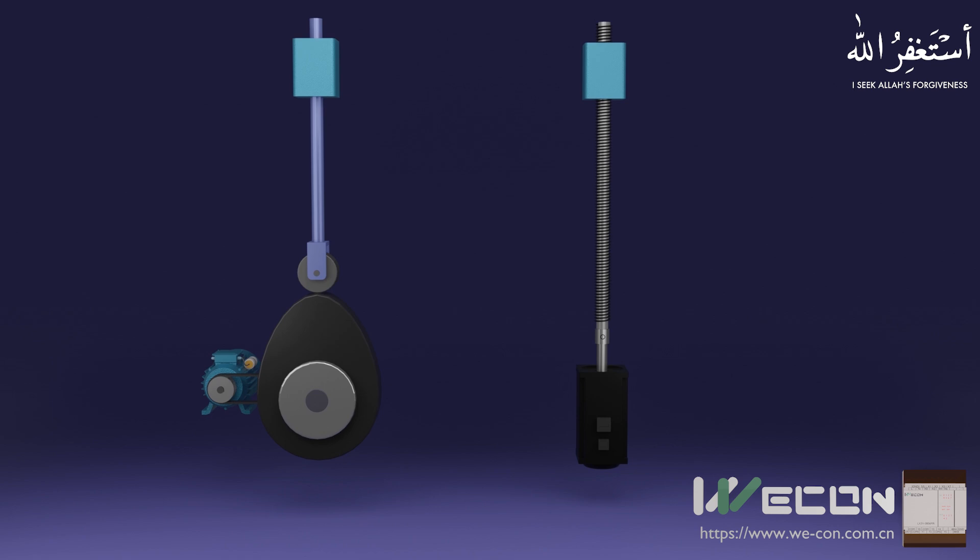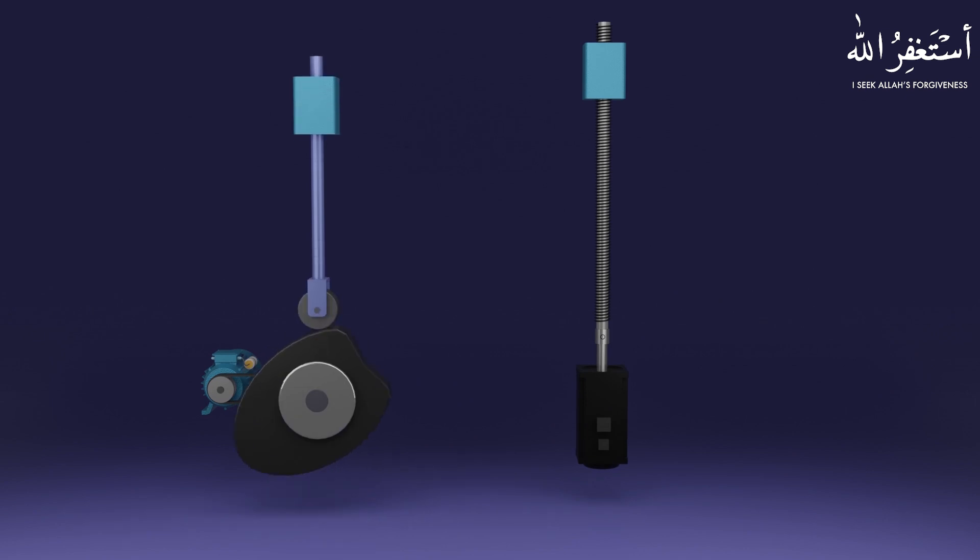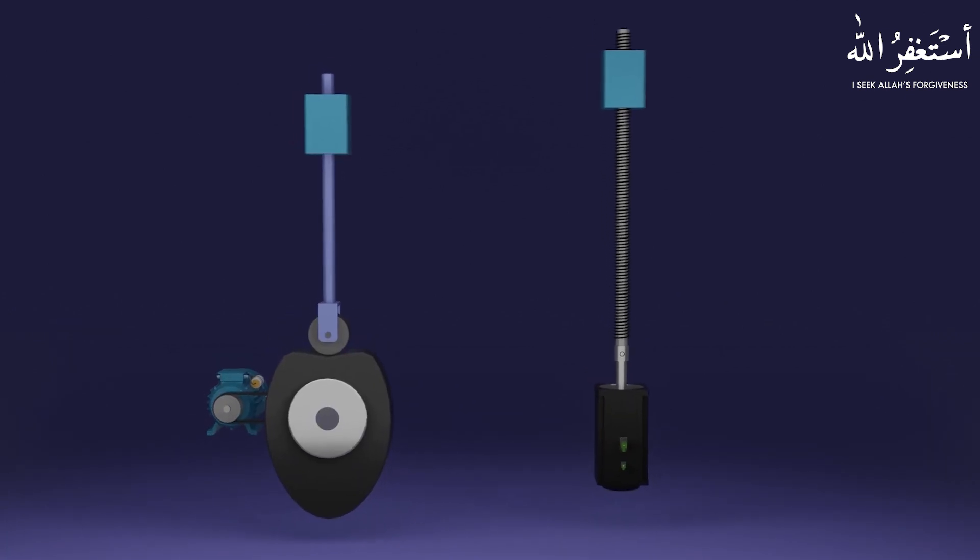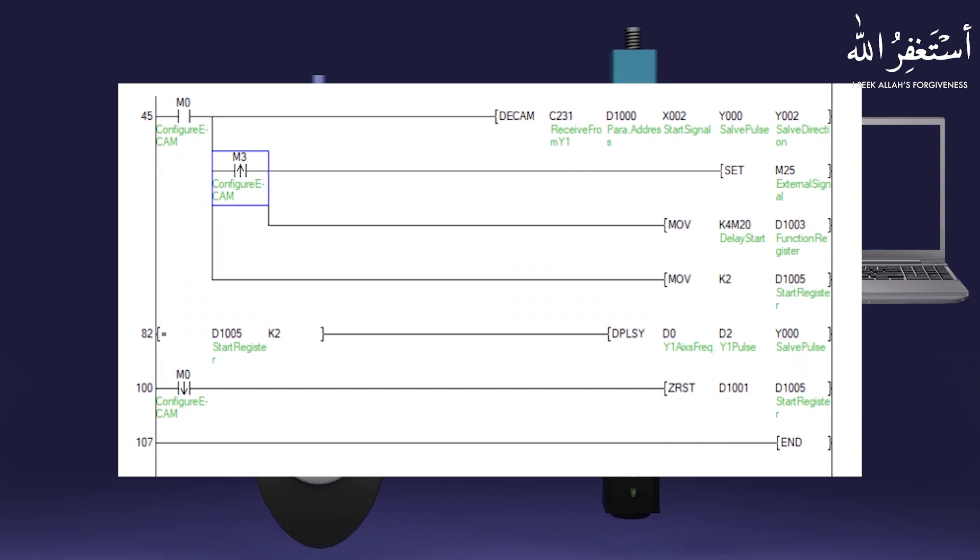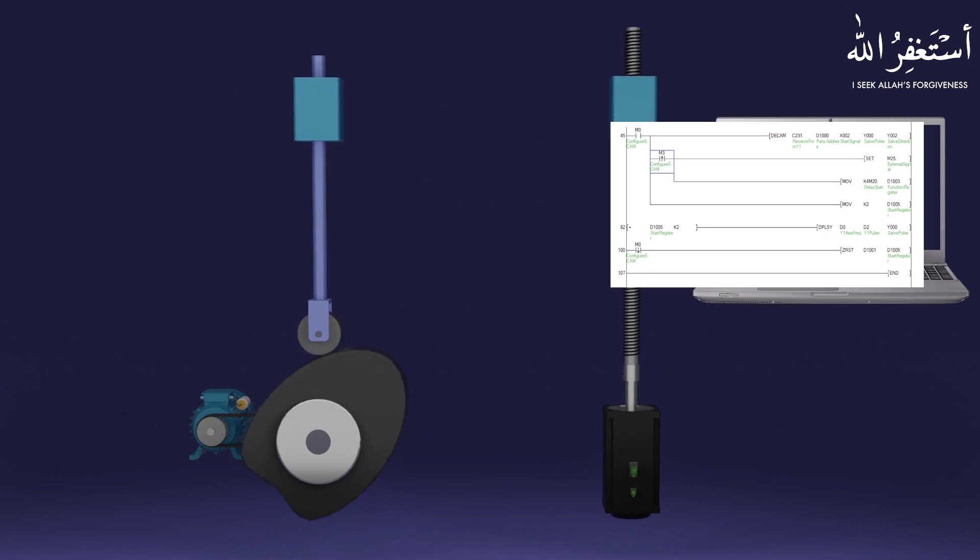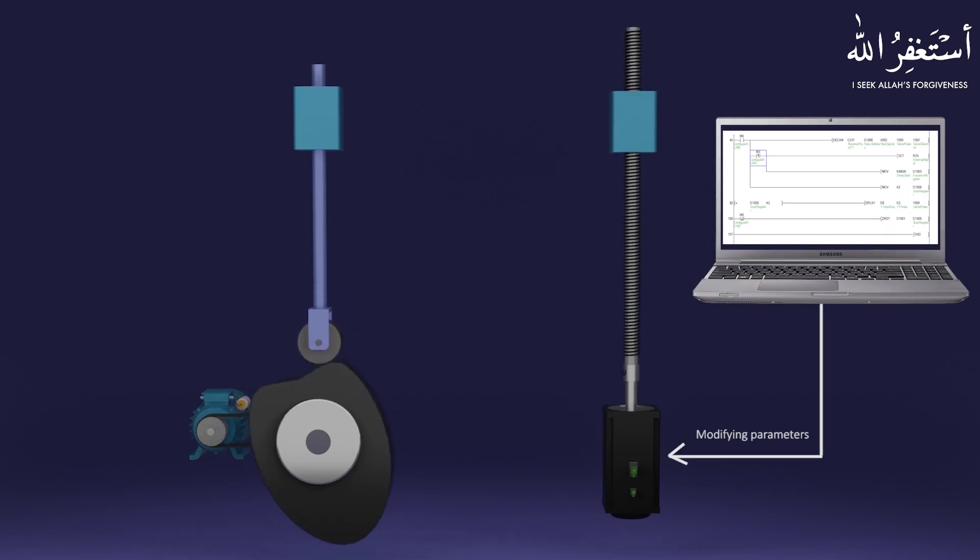The problem with mechanical cams is that if we have to make small changes in the pattern of movement of the cam follower, we have to change the cam every time. On the other hand, with the e-cam function, these changes in the cam follower motion pattern can be achieved by modifying the e-cam parameters. There is no need to modify the hardware setup.